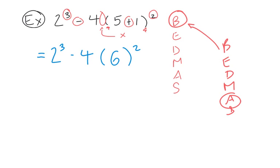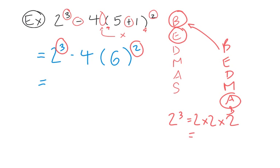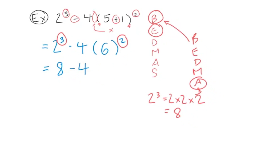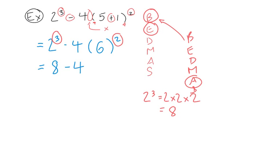For our next step we tackle all the exponents. We have 2 to the power of 3 and 6 in brackets to the power of 2. Two to the power of 3 is 2 times 2 times 2: two times two is 4, and four times two is 8. Six to the power of 2 is 6 times 6, which equals 36.